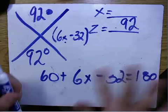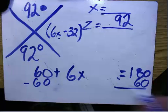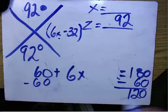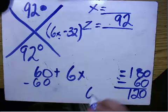Now you're going to subtract 60 from both sides, and you get 120, so you get 6x equals 120.